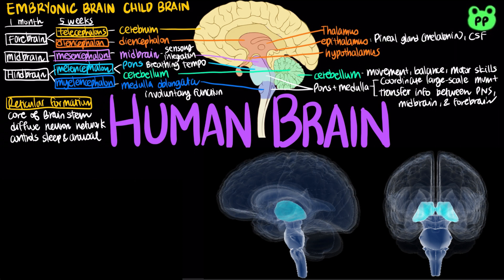The thalamus is the main input center for sensory information to the cerebrum and the main output center for motor information leaving the cerebrum. The hypothalamus regulates homeostasis and basic survival behavior such as feeding, fighting, fleeing, and reproducing.